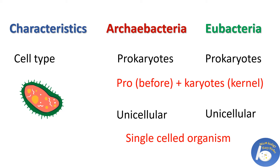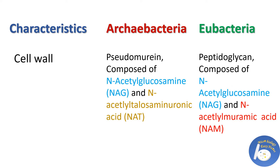Cell wall: in Archaebacteria, the cell wall is made up of pseudomurein. Pseudomurein is composed of N-acetyl glucosamine and N-acetyl talosaminuronic acid. In Eubacteria, the cell wall is made up of peptidoglycan. Here, peptidoglycan is composed of N-acetyl glucosamine and N-acetyl muramic acid.